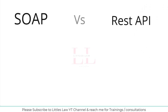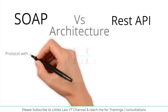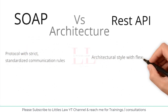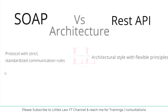The first difference between SOAP and REST API is in terms of architecture. SOAP, which we normally call Simple Object Access Protocol, is a protocol with a strict set of rules and standards. It is defined by the W3C — the World Wide Web Consortium. SOAP is enforced to have a specific structure for messaging, which includes an envelope, a header, and a body.